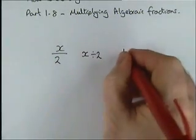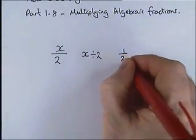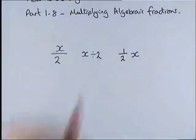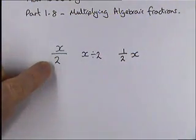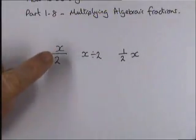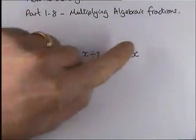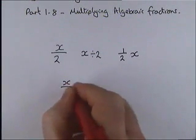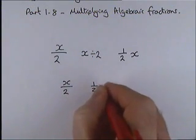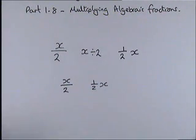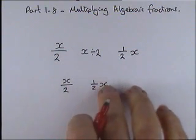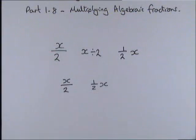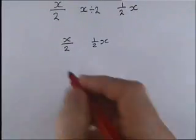But the one you might not have written was half of x. If that was 10 and you divided 10 by 2, another way of thinking about that is saying, well, that's a half of 10. Quite a lot in mathematics you might see a teacher go from that form to that form without really explaining it, but they're the same thing. Finding a half of a number is the same as dividing that number by 2.